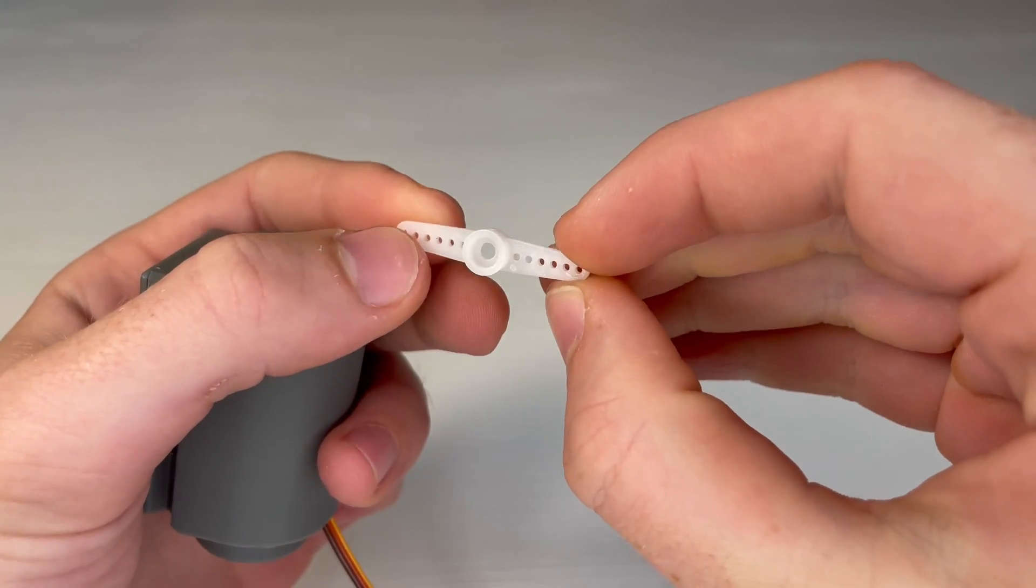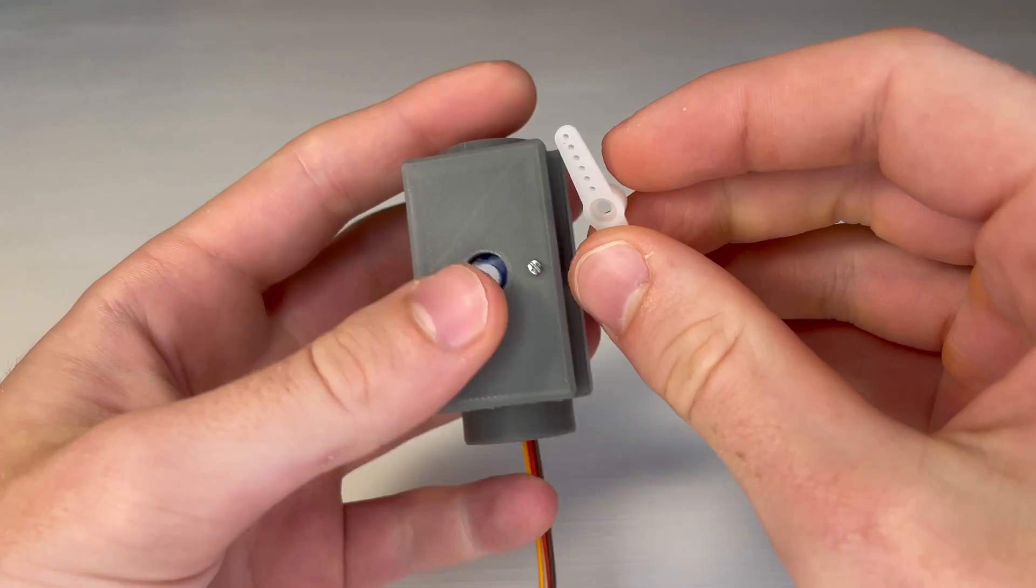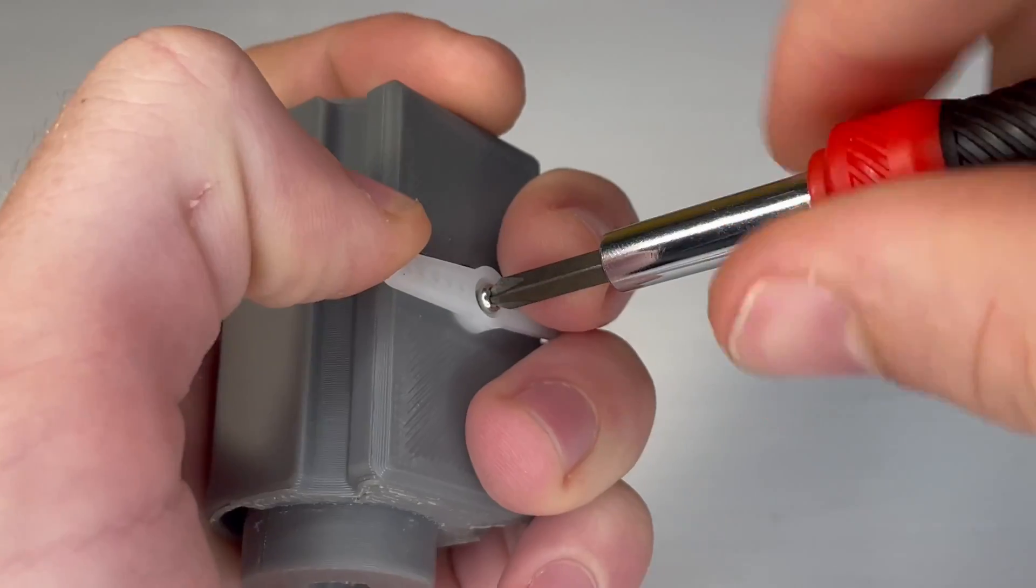Then we can press the servo horn onto the servo. And we'll screw it down with that last screw in the bag.